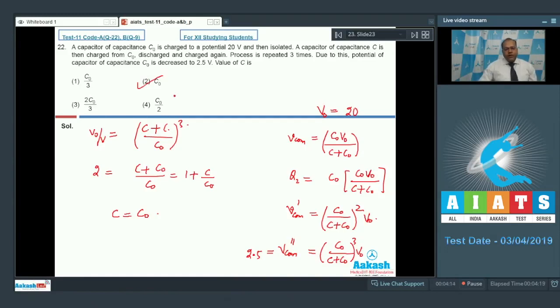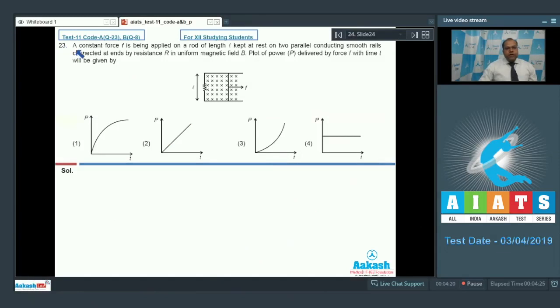Let's move to question number 23. In question number 23, a constant force F is being applied on a rod of length L, kept at rest on two parallel conducting smooth rails connected at ends by resistance R in uniform magnetic field B. Plot of power delivered by force F with time T will be given by.